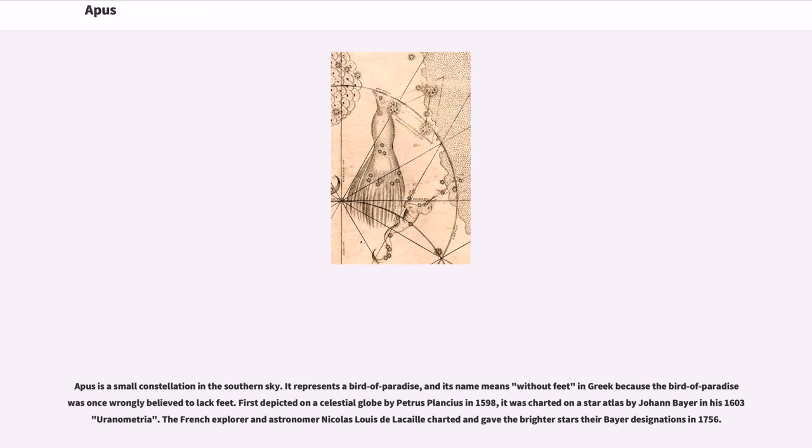Apus is a small constellation in the southern sky. It represents a bird of paradise, and its name means without feet in Greek because the bird of paradise was once wrongly believed to lack feet.